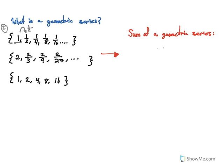We're going to be calling this our r-value. And then to get the next successive value from one-half, we multiply by one-half again. To go from one-fourth to one-eighth, we multiply by one-half. From one-eighth to one-sixteenth, we multiply by one-half. And since this is an infinite series, this is going to go on and on for infinity.